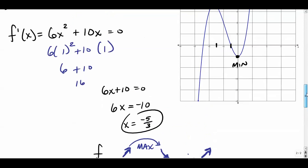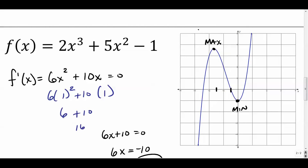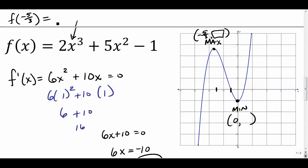So the critical points are at x equals negative five-thirds and x equals zero. To get the full coordinates, plug negative five-thirds and zero into the original function to get the corresponding y values.